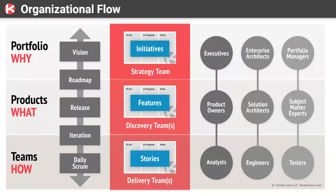This is the way to start looking at how you will flow your work across the organization. I've split the organization into three layers — the three voices constantly happening within an organization: the voice of why, the voice of what, and the voice of how. At the highest level — the portfolio level — your strategic team, made up of executives, enterprise architects, and portfolio managers, will have a Kanban board flowing cards of type initiatives. These are the highest-level cards in the organization — this is where you know where your organization is heading.